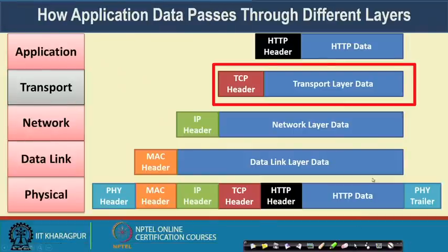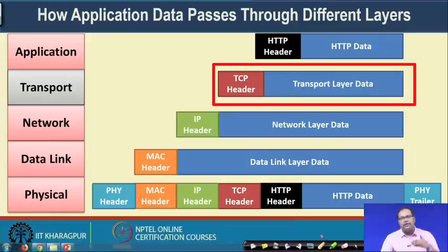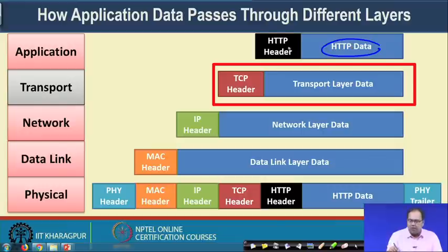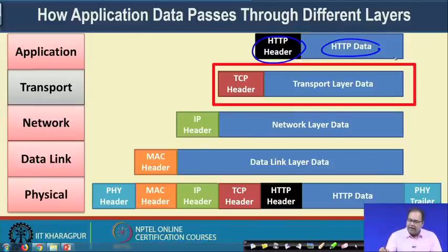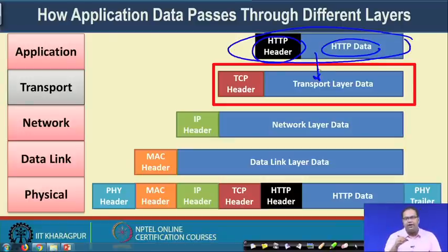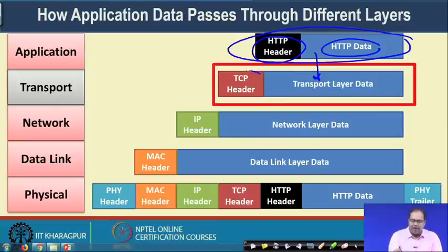Let us look at how different layers of the protocol stack each add their own header. In the application layer, consider an HTTP application sending data from a browser — you have HTTP data from the browser, and the HTTP protocol adds its own header containing various information about the application layer connectivity. This entire HTTP data plus HTTP header then comes as the transport layer data, and to this the transport layer adds its own transport layer header.